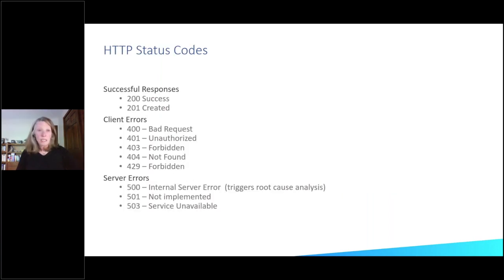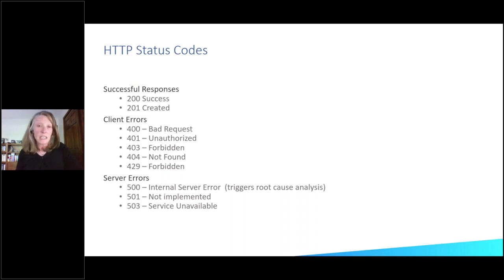Another thing we had to agree on was HTTP status codes. The list we have are the ones we felt were most common. The server errors are not something you want to happen. As a matter of personal choice, I don't document the 500 error code — that's something where you want to perform root cause analysis and not release software with an error like that. I found that in the OpenAPI spec, these status codes are very often missing, and they should be there if they're possible.